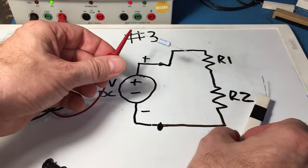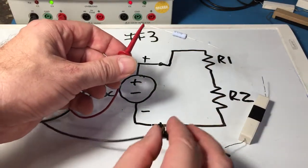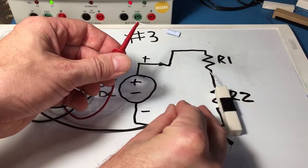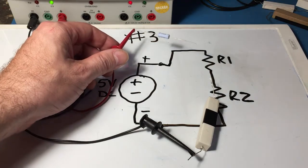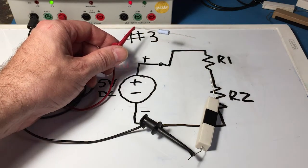So we connect our R1 to the red wire, the positive wire. Connect our R2 to the negative wire and then I can put in another jumper wire in the middle.